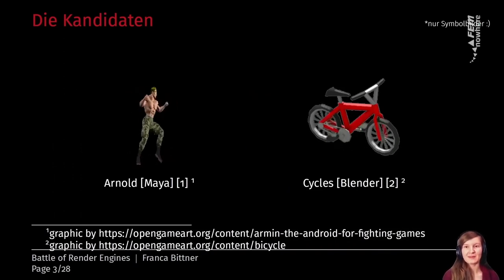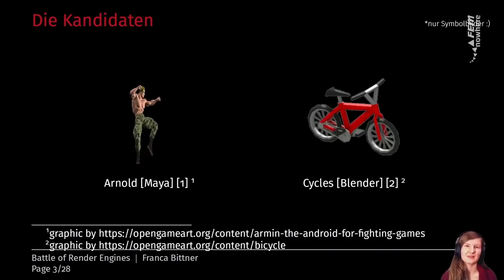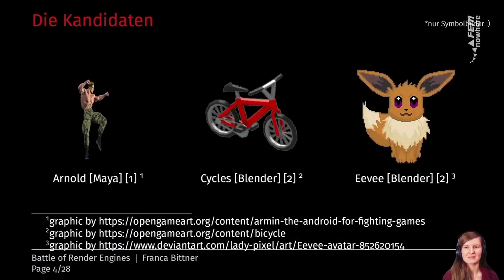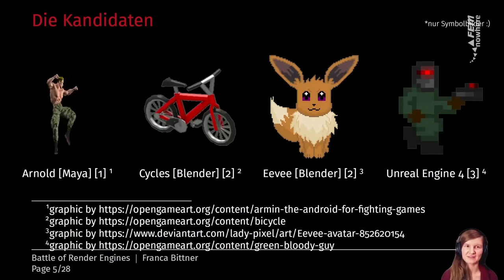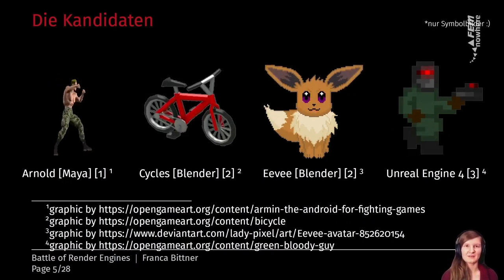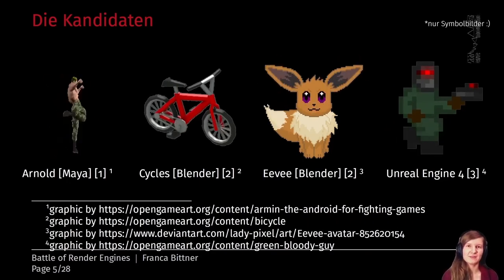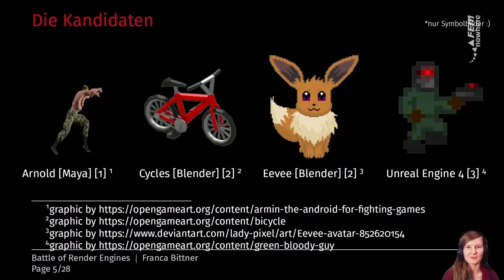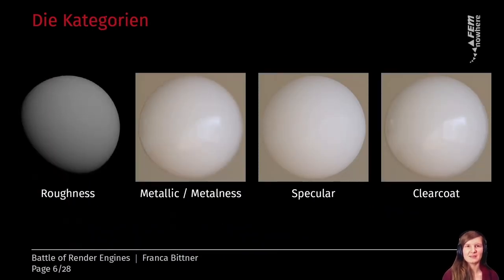The first of the four renderers I compared is Arnold from the 3D graphics software Maya. Arnold is a path tracer, the same as Cycles from the Blender software. Both are offline renderers, which means it takes a while to get results and they don't work in real time. Unlike Eevee, which is also from Blender, and the Unreal Engine 4 — both are real-time renderers. Unreal Engine 4 is also the only gaming engine I analyzed.